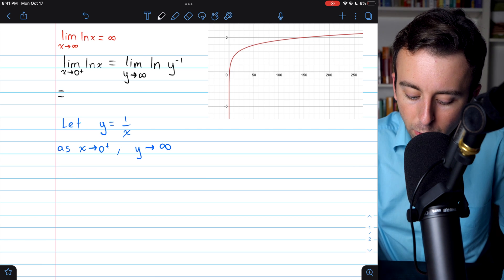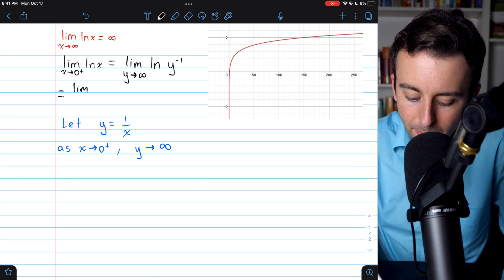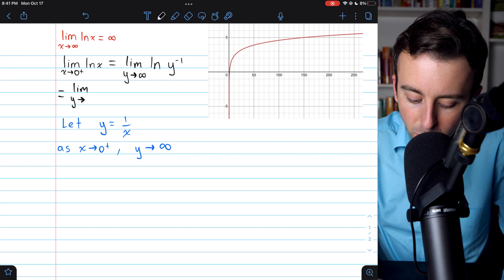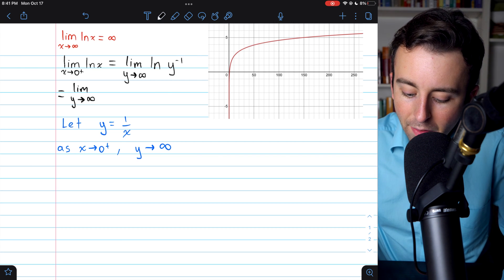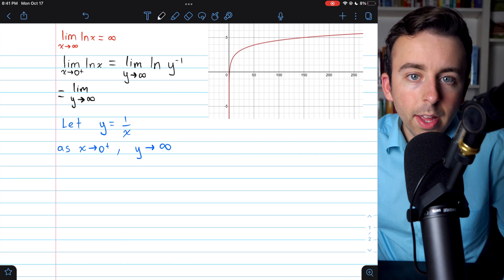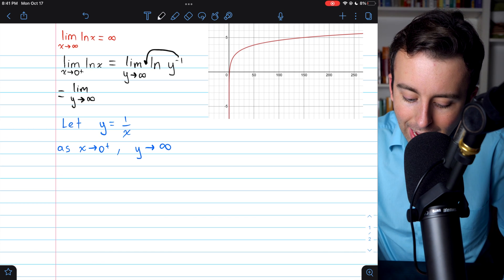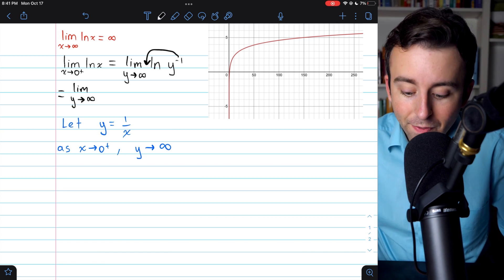Now we can use our log rules. So this is going to become the limit as y approaches infinity. And then we have a power of negative 1 inside the log. So we can bring that down as a factor.